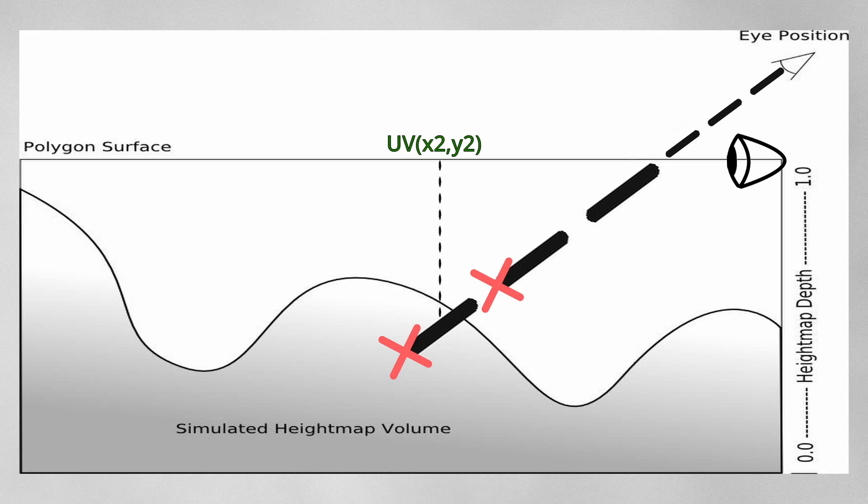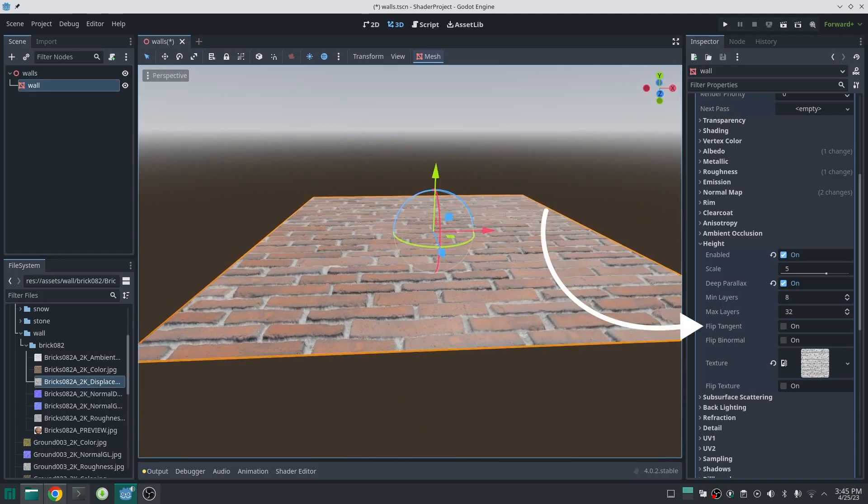Other parameters are flip tangent and flip binormal. In case your tangent and binormal are not in the direction of your UV you can flip them here, but now everything is working so I won't touch them. There is another parameter called flip texture which will reverse the direction of the height map.